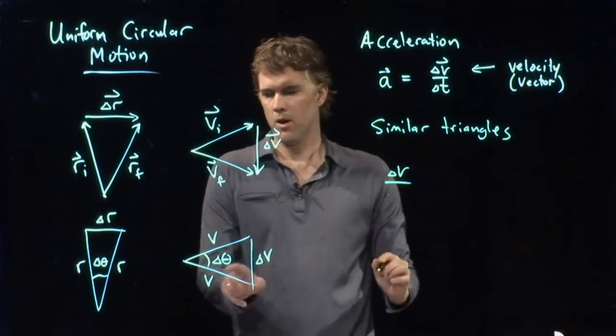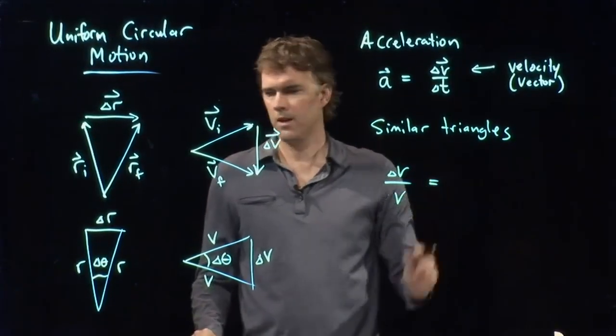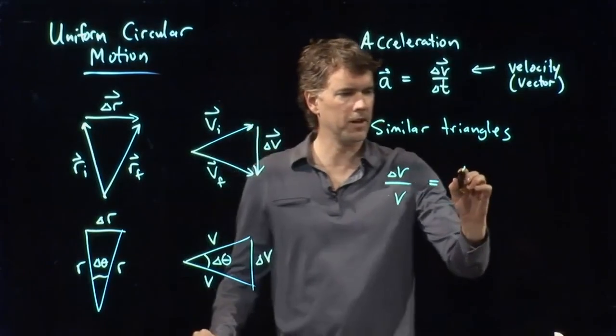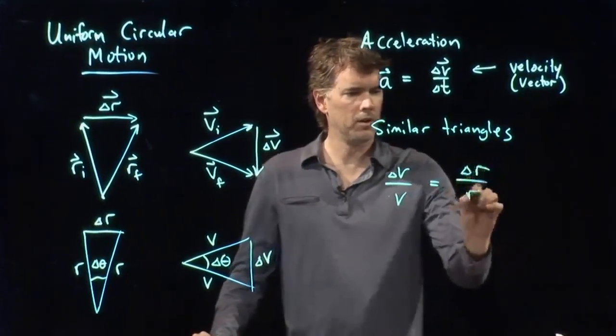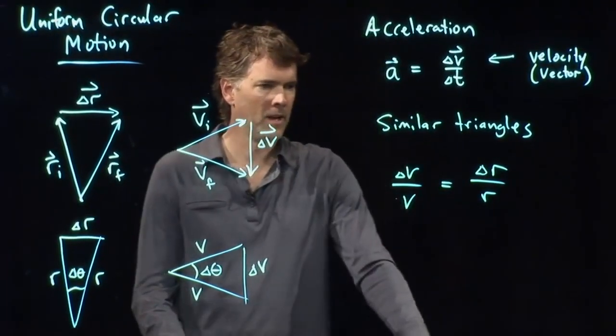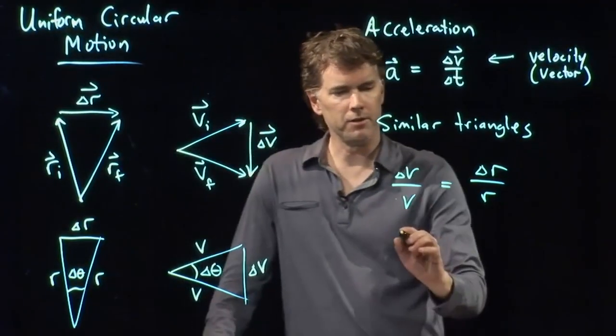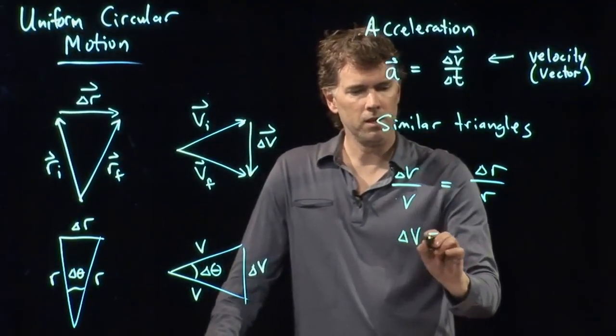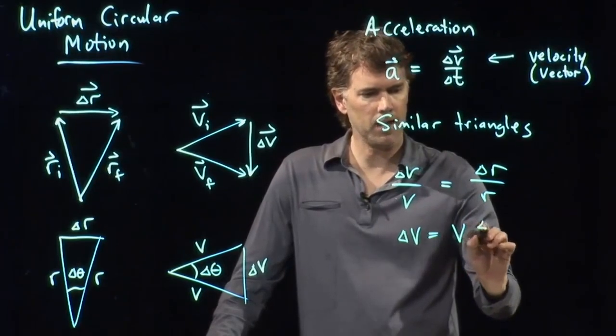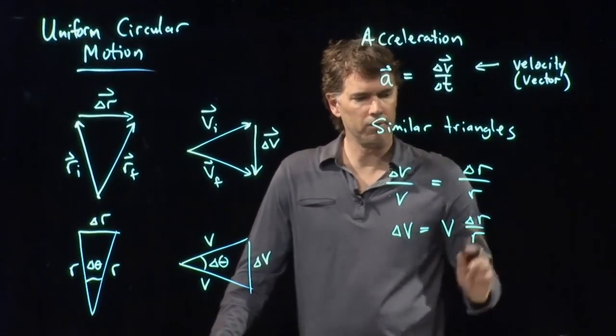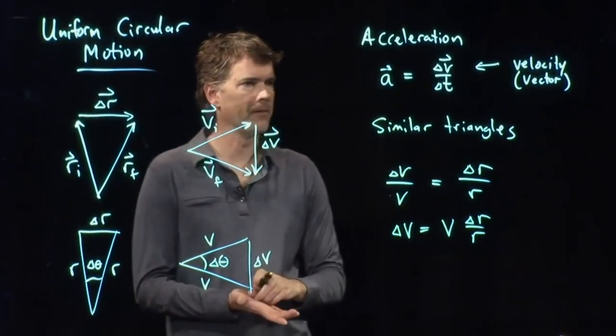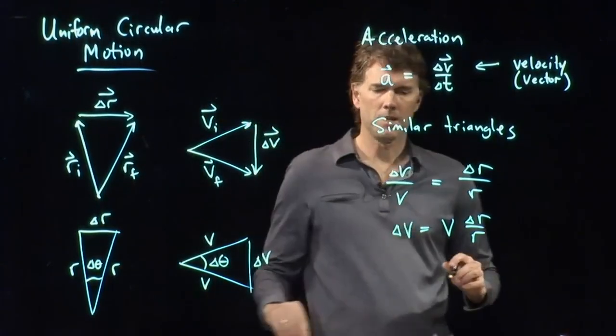Delta v over v is exactly the same as delta r over r. And now I can solve this for delta v. I get delta v is equal to v times delta r over r. I just multiplied across by v. And now let's plug that into a.